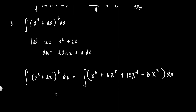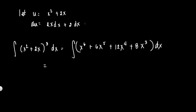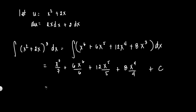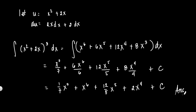Now we can integrate directly: the integral of x⁶ + 6x⁵ + 12x⁴ + 8x³ dx equals x⁷/7 + 6x⁶/6 + 12x⁵/5 + 8x⁴/4 + C. Simplified, this is (1/7)x⁷ + x⁶ + (12/5)x⁵ + 2x⁴ + C. That is your final answer.